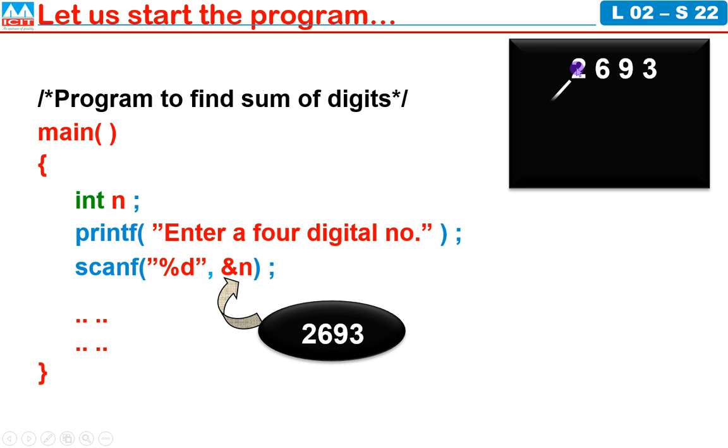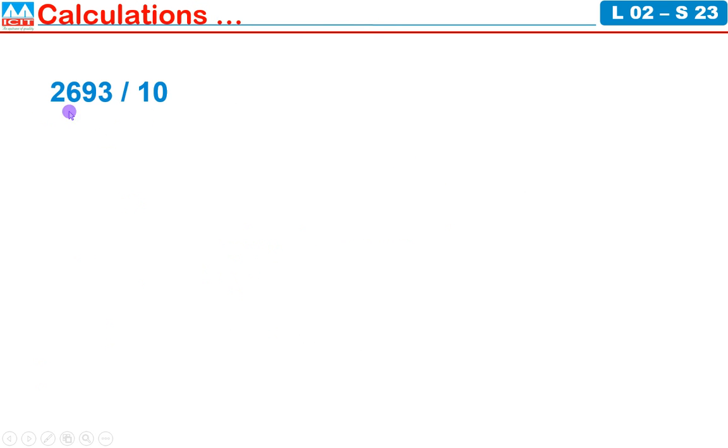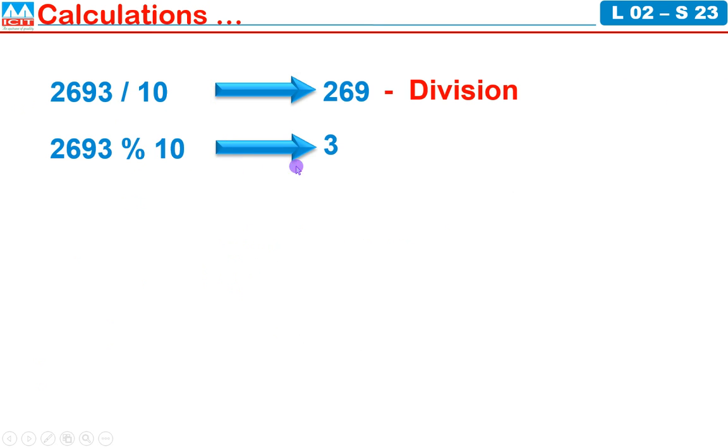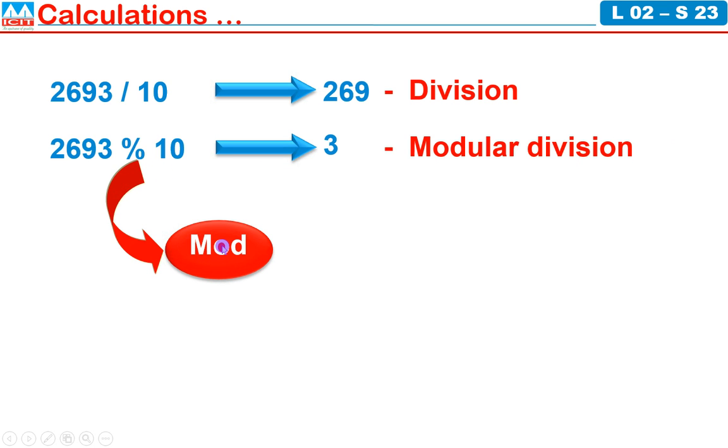2693 must be passed to variable D4. Now 2693 by 10 you will get 269. 2693 modulo 10 you will get 3. This is called division and this is called modular division. This is called mod operator. The process is: 2693 divided by 10 gives 269 times. You will get 2690. The remainder will be 3. By applying slash you are getting quotient. By applying modular you are getting remainder. This remainder into D4. D4 equal to N modulo 10. That is the concept.